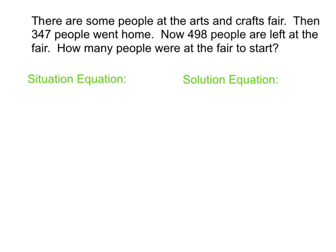Let's look at one last situation. When you read this one, I want you to pause and see if you can write out a situation equation you think would make sense, then play ahead and see if we agree. So there are some people at the Arts and Crafts Fair, and then 347 people went home. Now 498 people are left at the fair. How many people were at the fair to start? This sounds a lot like Bob's bank situation. We're going back to the beginning.